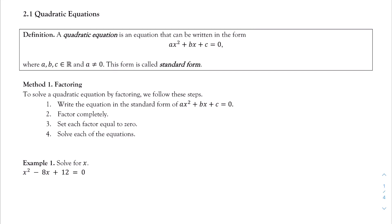So what is a quadratic equation? Let's define it. A quadratic equation is an equation that can be written in this given form: ax squared plus bx plus c is equal to 0, where a, b, and c are real numbers, and we're assuming that a is not 0. When I write my equation in this form, ax squared plus bx plus c equal to 0, we call it standard form.